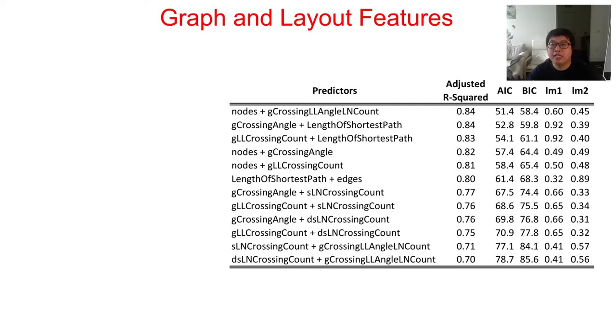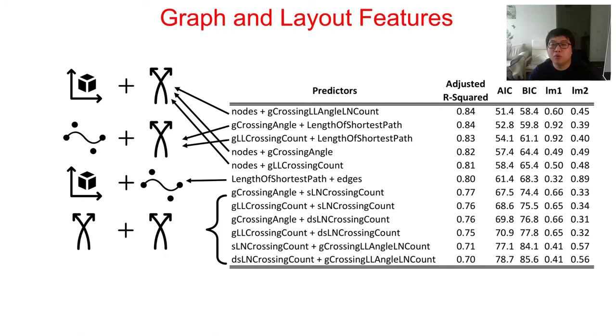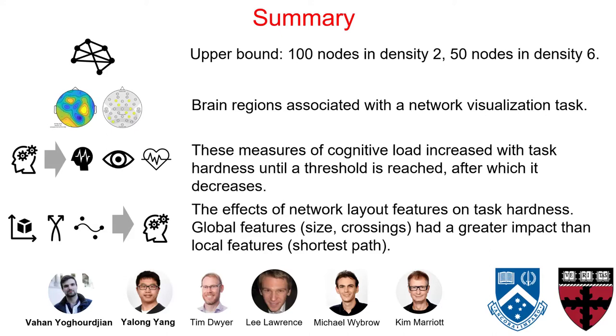We also run linear model with two predictors. We found adding one predictor can improve the model's accuracy significantly. The top model was combination of size plus crossing and shortest path plus crossing. We also run models with three predictors. However, there is no significant improvement on model accuracy.